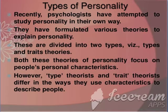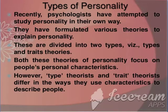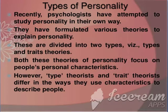Psychologists distinguish between type and trait approaches to personality. They have formulated various theories, divided into two types: first is type theory, and second is trait theory. Both these approaches focus on people's personal characteristics. However, type theorists and trait theorists differ in the way they use characteristics to describe people.